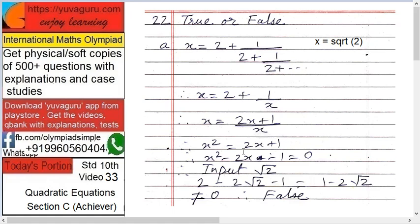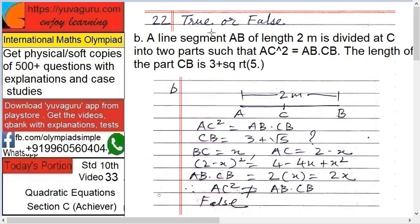So up till now, we have x² equals 2x plus 1. Now we input the value x equals √2. It becomes (√2)² which is 2, minus 2√2, minus 1. So 2 minus 1 is 1, giving 1 minus √2. Is this equal to √2? No. So the statement is false.